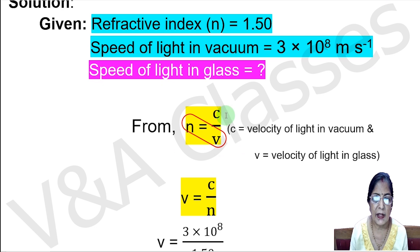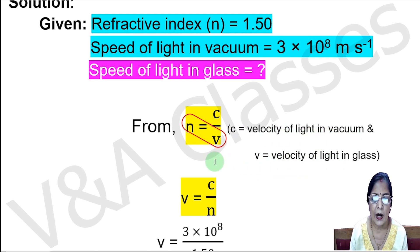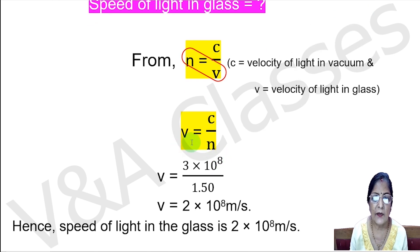We will use the refractive index formula: n equals c upon v, where c equals the velocity of light in vacuum and v equals the velocity of light in glass. Rearranging, we get v equals c upon n.